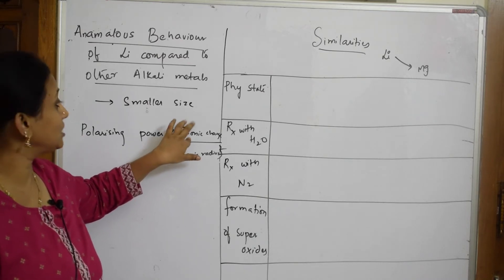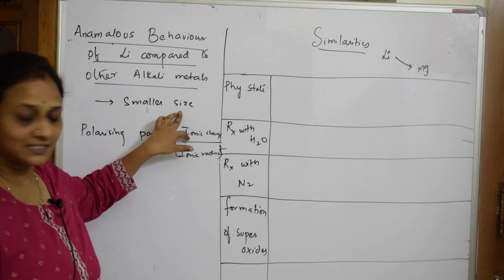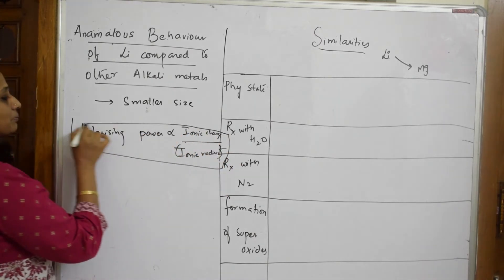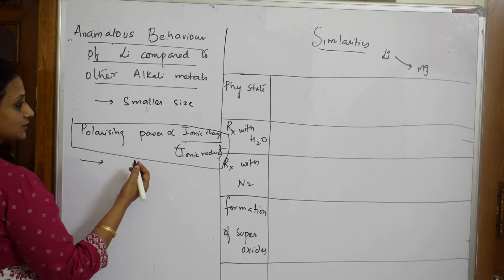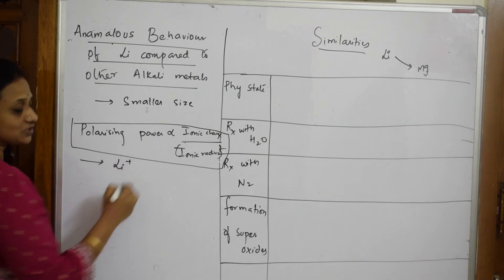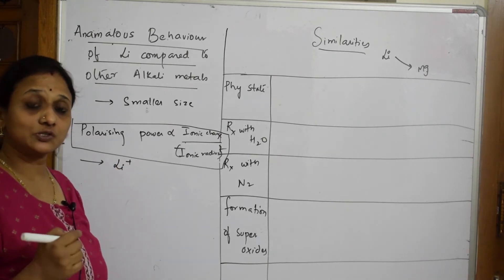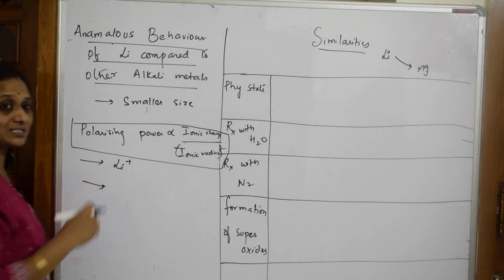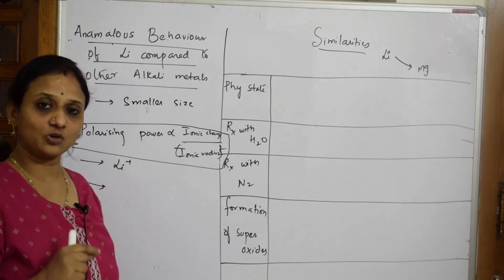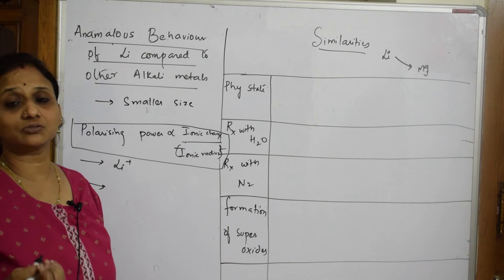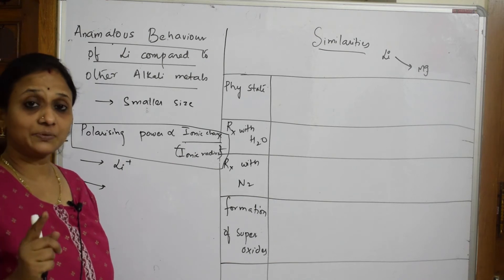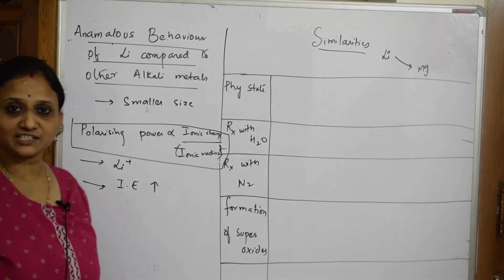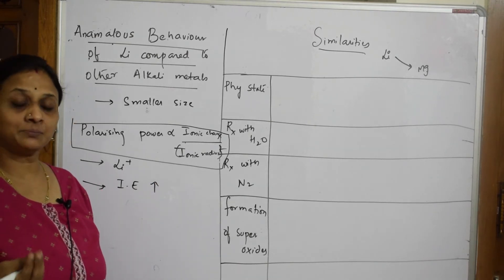Because of its smaller size, lithium only forms a +1 charge; going to +2 would require very high ionization energy. When the size is smaller, the energy required to remove that electron is very high, so the ionization enthalpy of lithium is very high compared to other alkali metals.